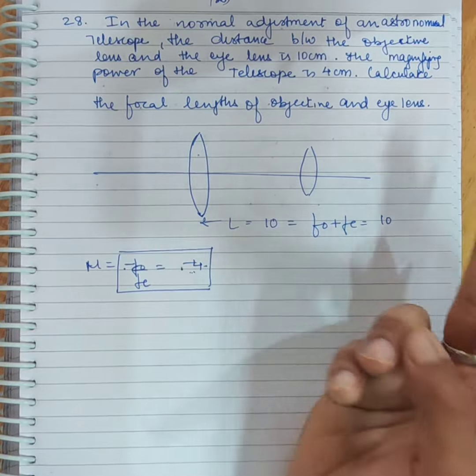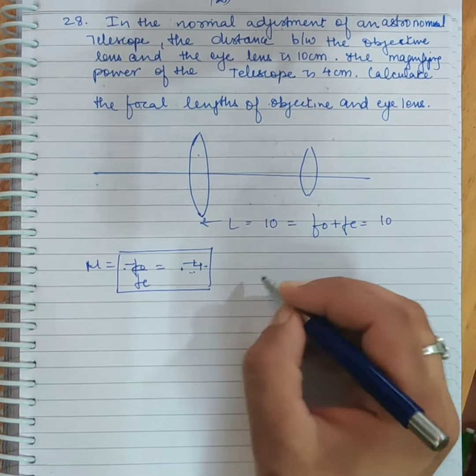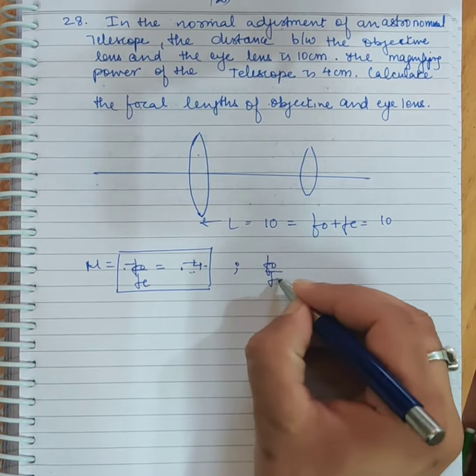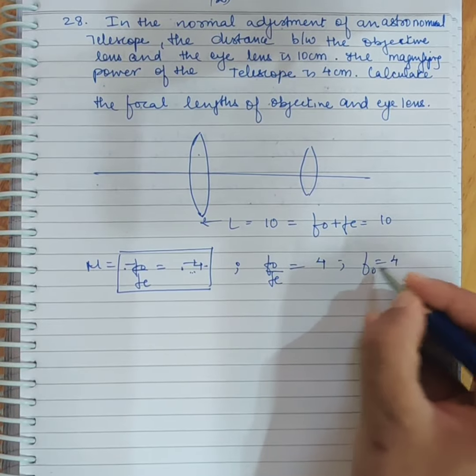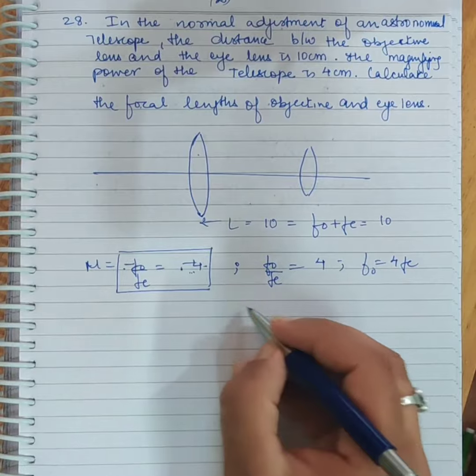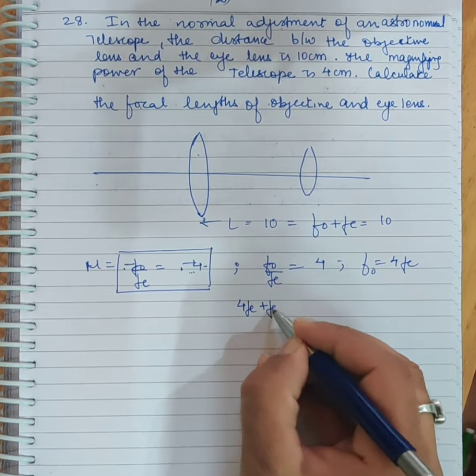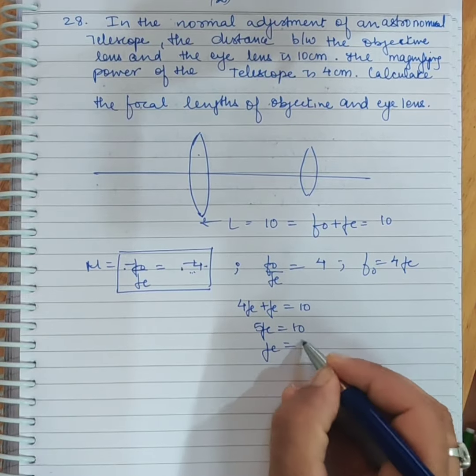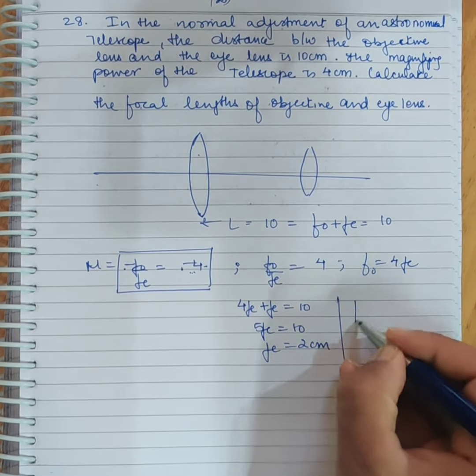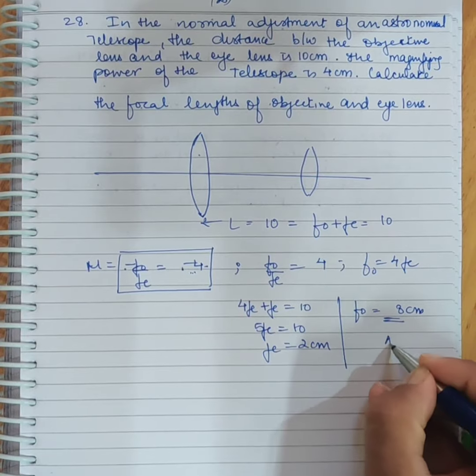Calculate the focal length of the objective and eyepiece. So fo/fe = 4. Since the minuses cancel, fo = 4fe. Then 4fe plus fe equals 10, so 5fe = 10. Fe is 2 centimeters, and fo is 8 centimeters. That is the answer.